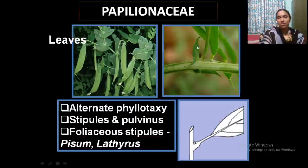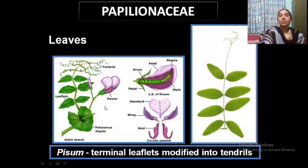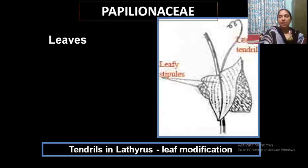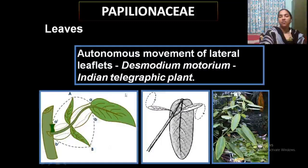A peculiar feature is the stipule, which is leaf-like in some cases. There is also a swollen structure at the base of the petiole known as the pulvinus — a very important characteristic of this family. In some cases, the leaf tip is modified into tendrils, helping the plant to climb. The Indian telegraph plant, Desmodium gyrans, shows autonomous self-movement of lateral leaflets, which is why it is known as the telegraph plant.